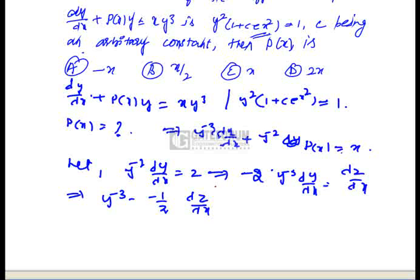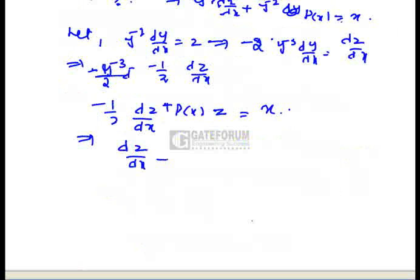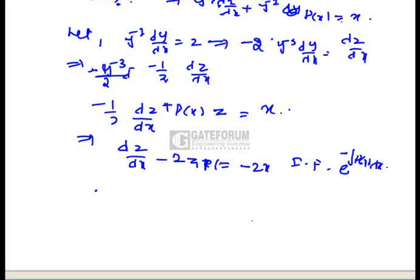Substituting y⁻³ = (-1/2)·(dz/dx) and y⁻² = z into the equation gives: (-1/2)·(dz/dx) + p(x)·z = x, which simplifies to dz/dx - 2p(x)·z = -2x. This is clearly a first-order linear differential equation, whose integrating factor is e^(∫p(x)dx).